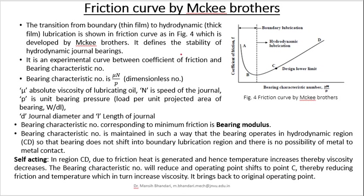As discussed, at lower speed there is a very thin film of lubrication between the journal and the bearing, and as speed increases, more and more fluid is forced into the space between the journal and bearing — that is called thick film lubrication. This is shown in the curve of figure 4. This curve was drawn by the Mackee brothers experimentally and defines the stability of the hydrodynamic journal bearing. The curve plots coefficient of friction against bearing characteristic number, which is μN/P, where μ is absolute viscosity of the lubricating oil, N is speed of the journal, and P is the unit bearing pressure. Unit bearing pressure is calculated as W divided by dL, where d is the diameter and L is the length of the journal. The bearing characteristic number corresponding to minimum friction is known as bearing modulus.